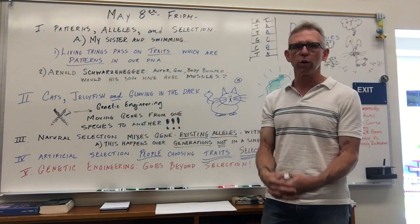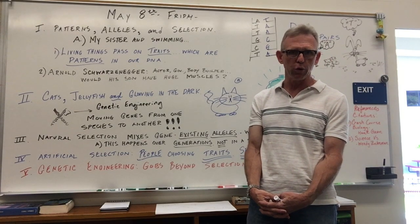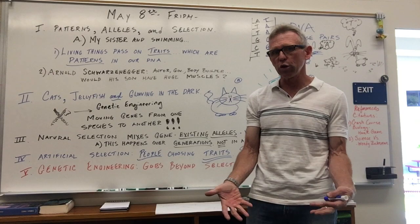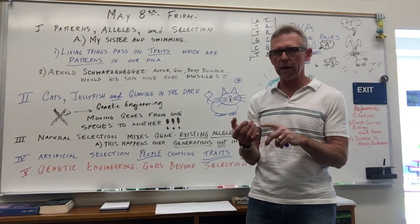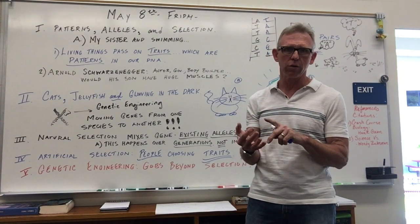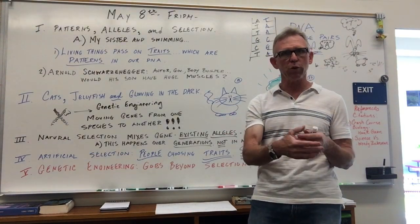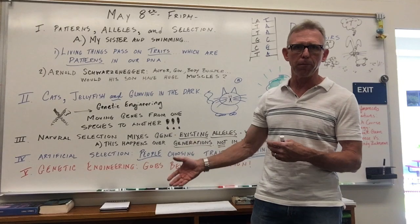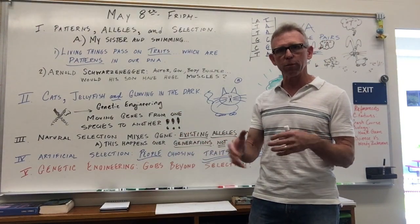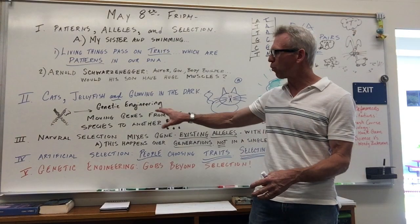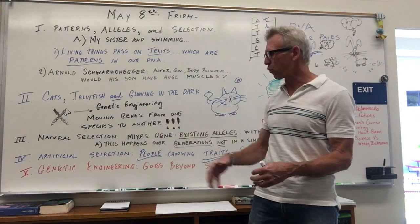In fact, one of the articles I'll put up there has to do with genetically modified foods. The reason we would genetically modify food is to try to make it resistant to pests, blight, and disease. There's a little bit of controversy, as you might imagine, with taking DNA from one species and putting it into another — that will be addressed in some of the reading. But it's important to remember this goes a little bit beyond natural selection.